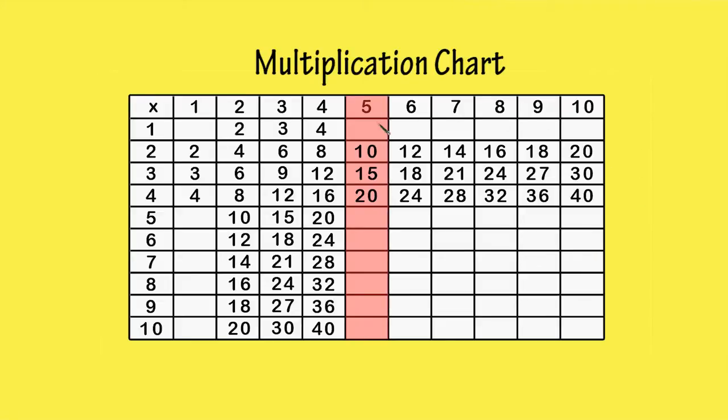We can start by filling in the blank boxes in the fifth column. 5 times 1 is 5. The next 3 boxes are already filled in, from when we did the 2, 3 and 4 times tables.